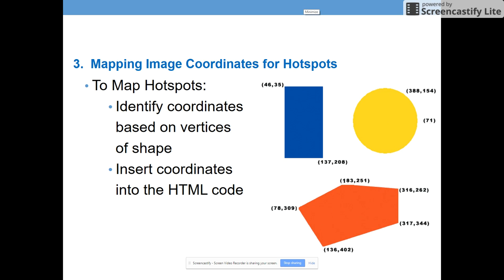So for each of these, we have to find key coordinates. And it differs depending on the type of shape that you select. So for each hotspot, we're going to identify key coordinates based on the vertices of the shape. And then we're going to insert those coordinates into HTML code. And I'm going to go through all three of these on the next three slides. But I just want to really highlight that each of them has a different set of information that it needs to create that particular hotspot shape.